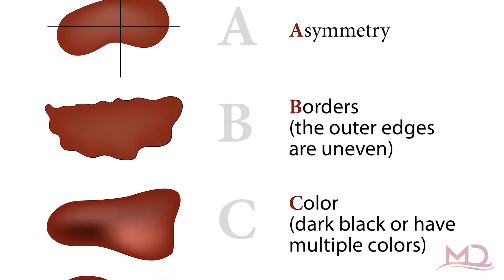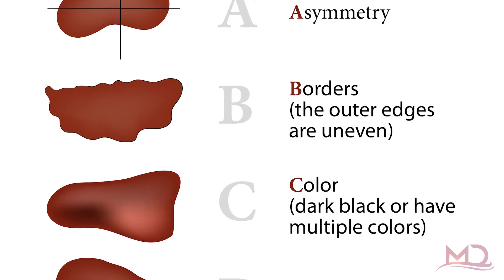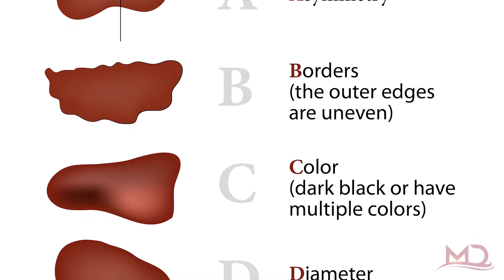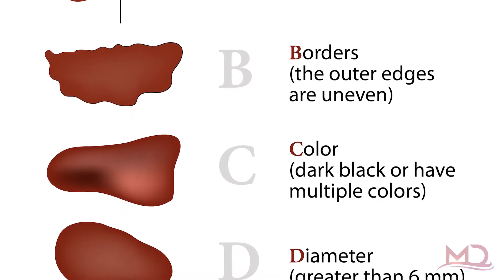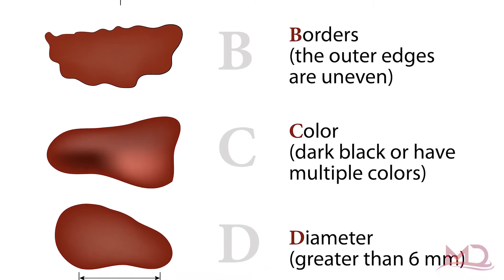C is color — you're looking for multiple colors: brown, black, sometimes you'll see some blue, maybe some white or some red. That's something to look out for.